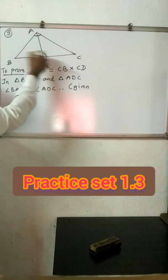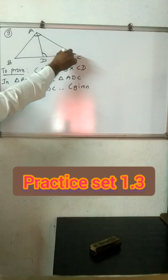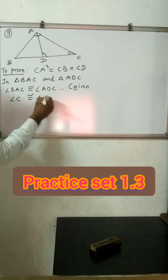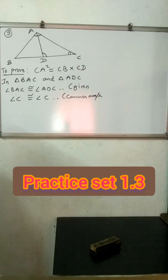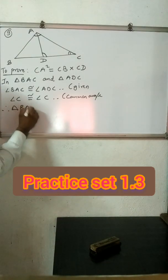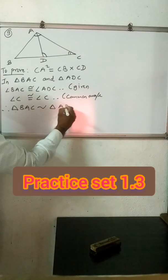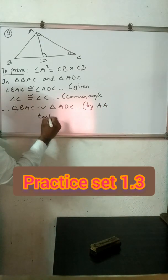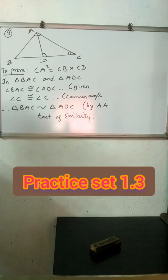Angle C is common to both triangle BAC and triangle ADC, so it is a common angle. Since two angles of one triangle are congruent to the corresponding two angles of the other triangle, triangle BAC is similar to triangle ADC by the Angle-Angle test of similarity.